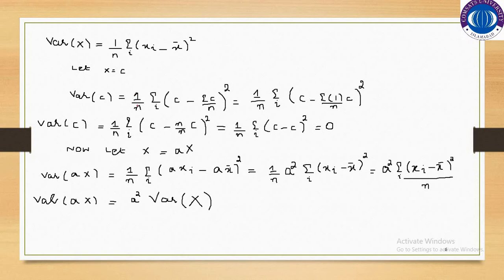According to the formula, it would be 1 over n times summation of (c minus c-bar) squared. Since we are finding the variance of c, we need the mean of c. As x-bar equals summation of x over n, the mean of c would be summation of c over n.